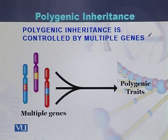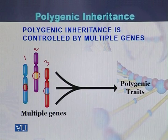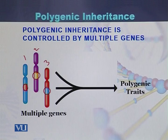Polygenic inheritance is controlled by multiple genes. Here we can see different chromosomes — chromosome 1, chromosome 2, and chromosome 3. Different genes are present: on chromosome 1 there is a gene, the second gene is on the second chromosome, and the third gene is on the third chromosome. When they jointly contribute for the existence or to inherit certain traits, such a phenomenon is called polygenic traits, and the inheritance pattern is called polygenic inheritance.